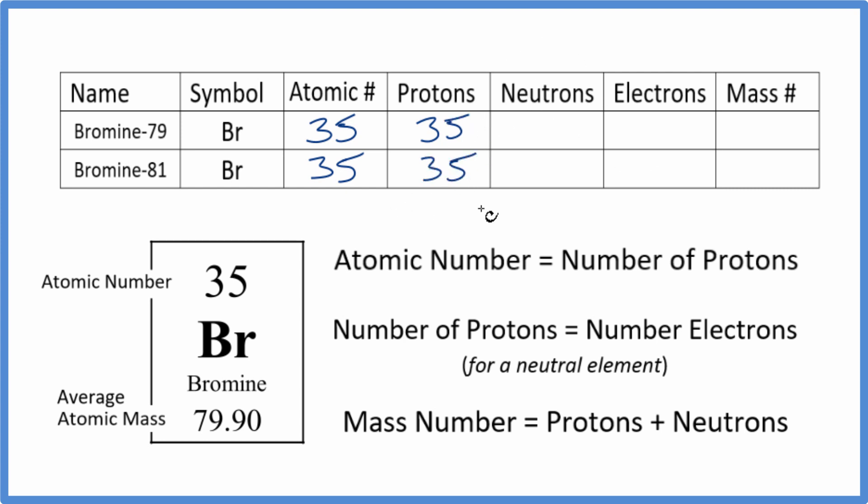Let's skip neutrons for now. When we look at the periodic table, bromine has no negative or positive sign after it - it's a neutral element. All elements on the periodic table are neutral, meaning their number of protons equals their number of electrons. Equal numbers of positive and negative charges balance out to give us a neutral element. So since we have 35 protons, we'll have 35 electrons.